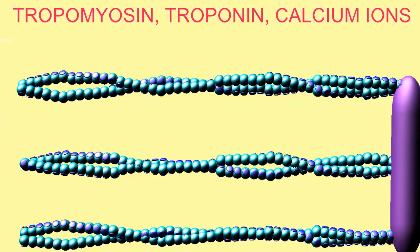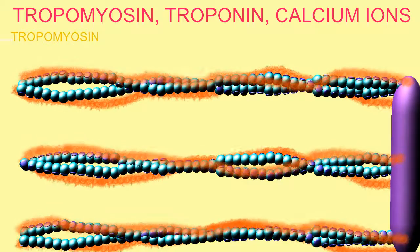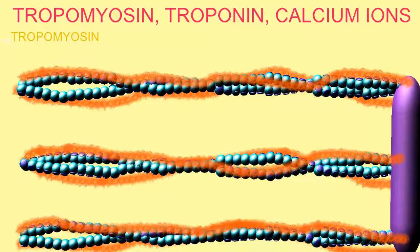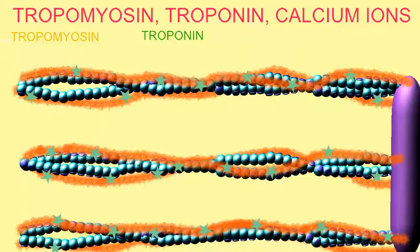At rest, the active sites of actin are covered by a rope-like molecule known as tropomyosin, which helps to stabilize the actin and also blocks the globular heads from binding to these active sites at rest. Another molecule known as troponin holds this tropomyosin in place.